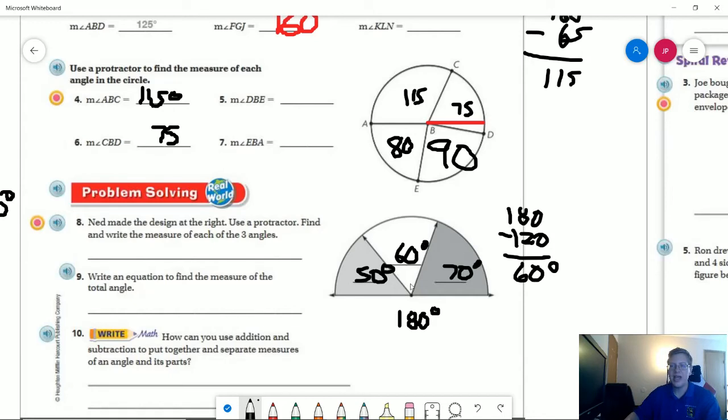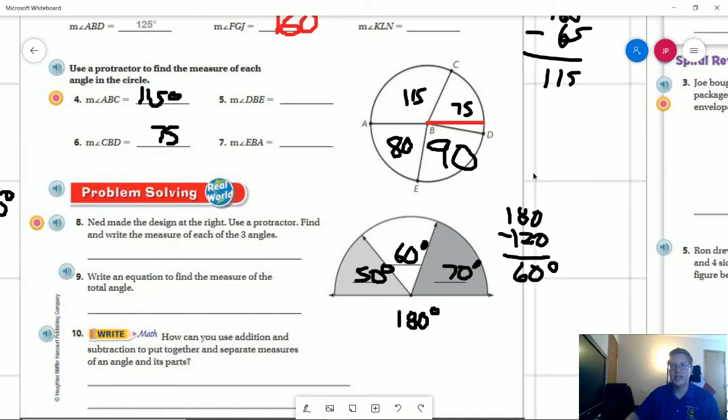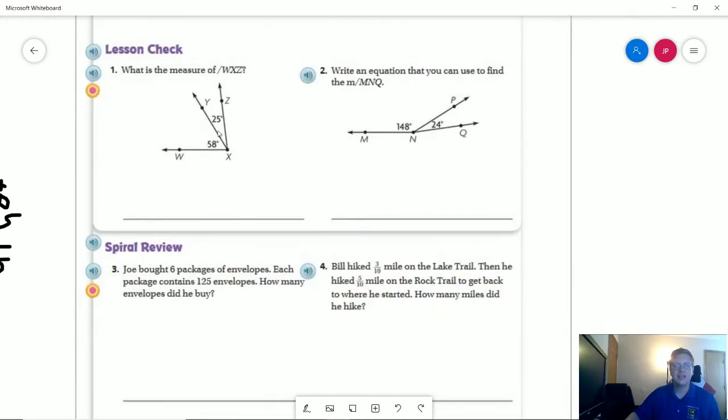And so number one on the back, we are looking at adding these two together. So 58 plus 25 should give us 83 degrees. And that makes sense because if we had a straight line going up from here, we would have a 90 degree angle. And we are very close to having that. And then our other one,